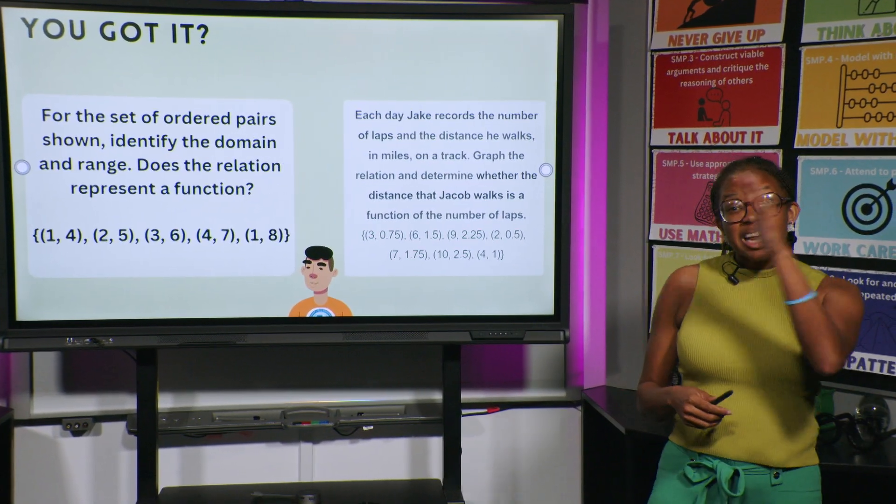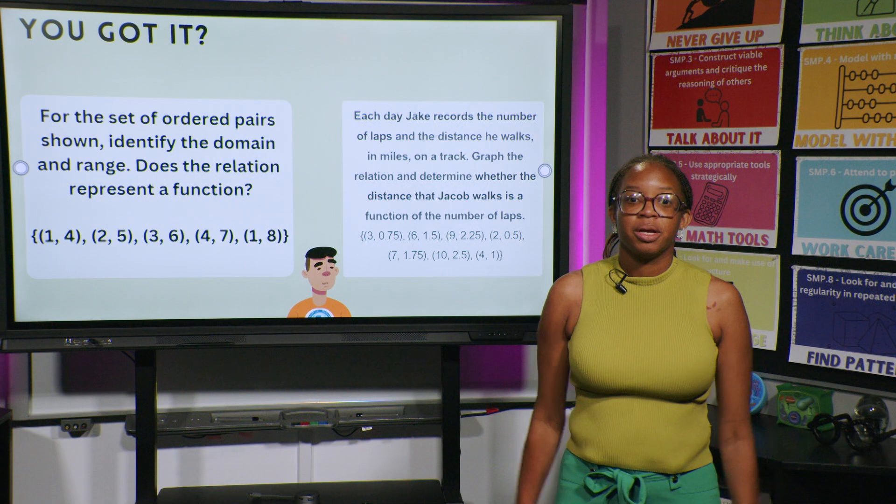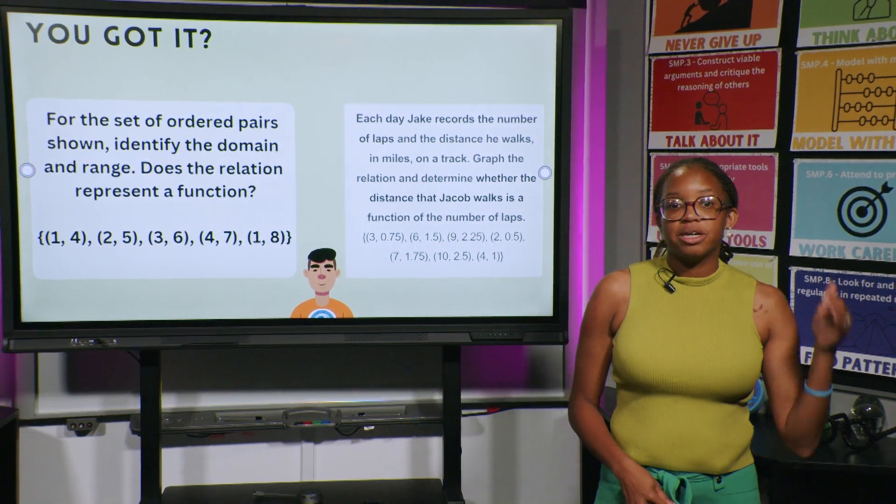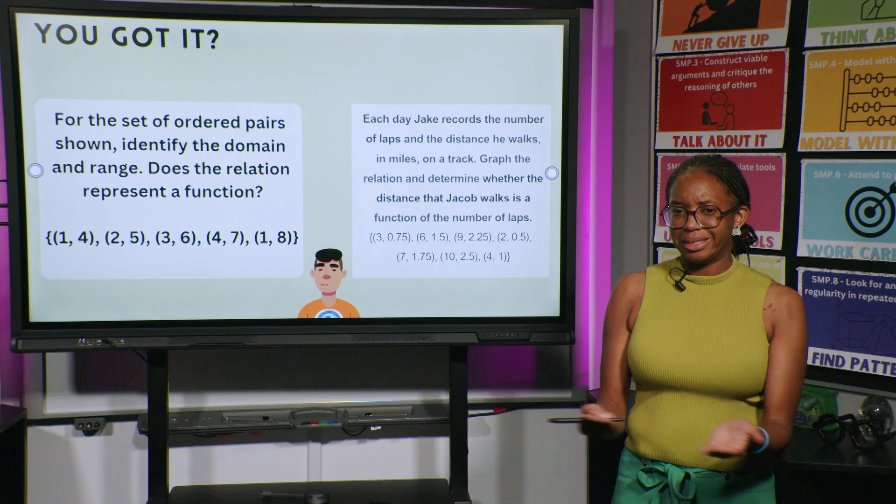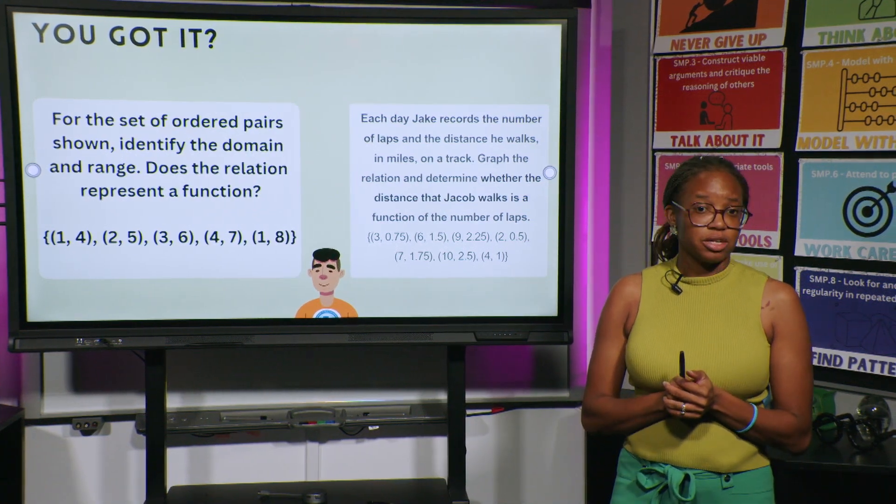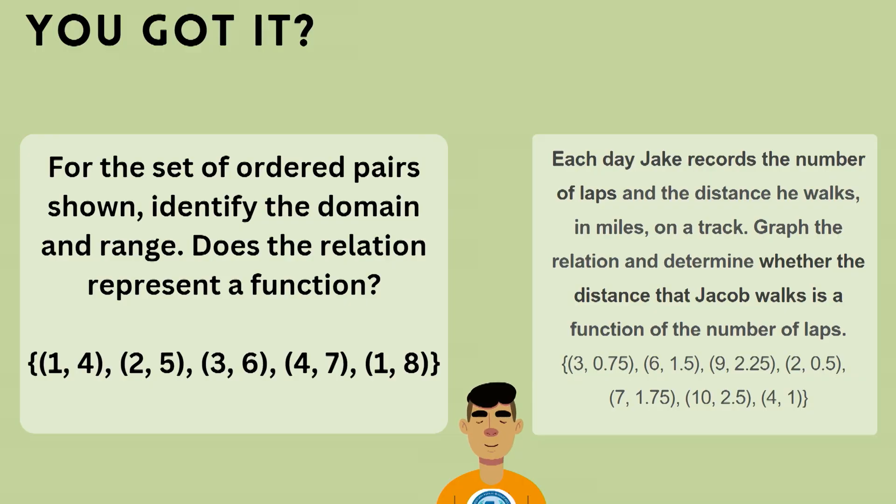The next one says, for the set of ordered pairs that you see here, identify the domain and the range, and then does this relation represent a function? We have (1,4), (2,5), (3,6), (4,7), and (1,8).